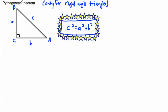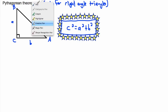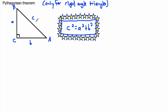Now, c has to be the hypotenuse. The hypotenuse is always the longest side in a right angle triangle, and it's always opposite to the 90 degree angle. So whichever angle is 90 degrees, the side opposite to it is the hypotenuse. The other sides can be called adjacent or opposite depending on which angle you're looking at — but for now let's just focus on the hypotenuse, which should be called c.